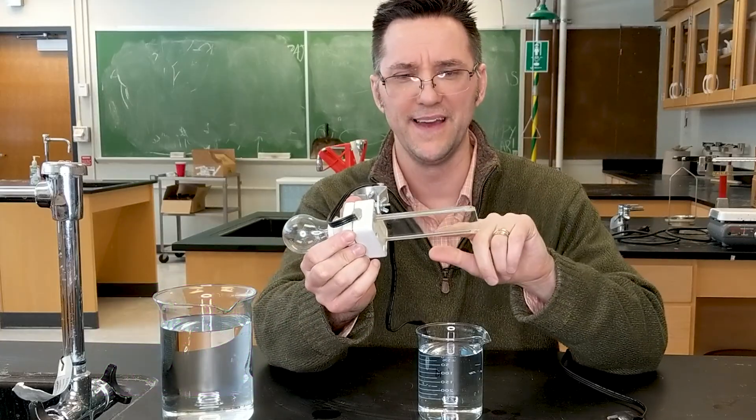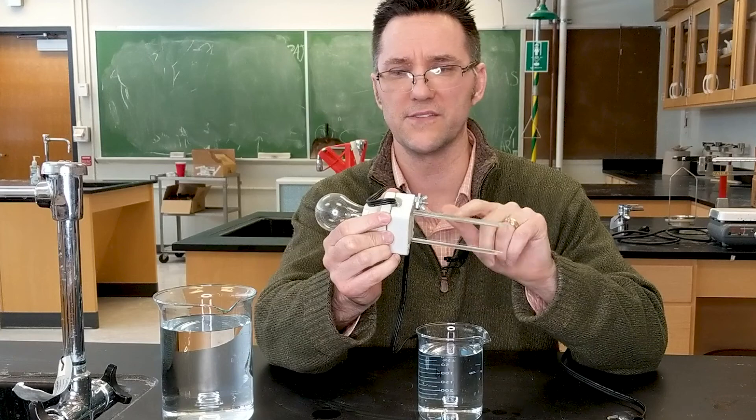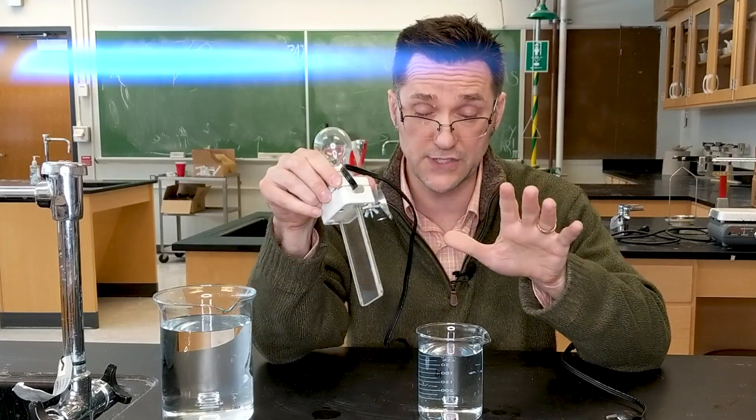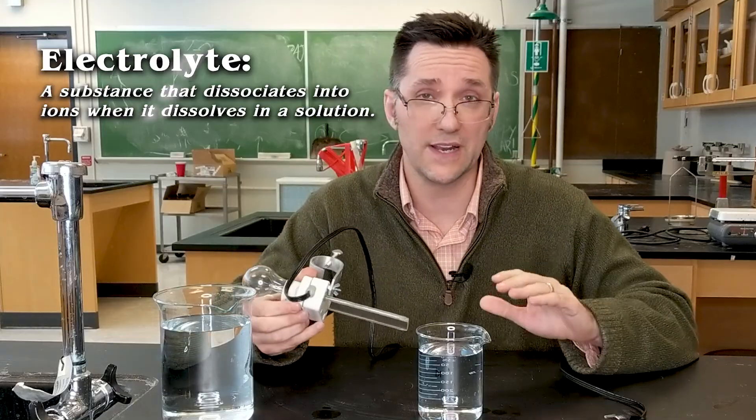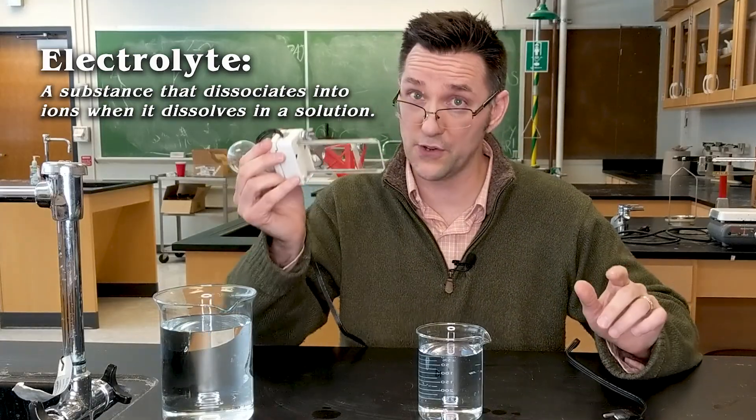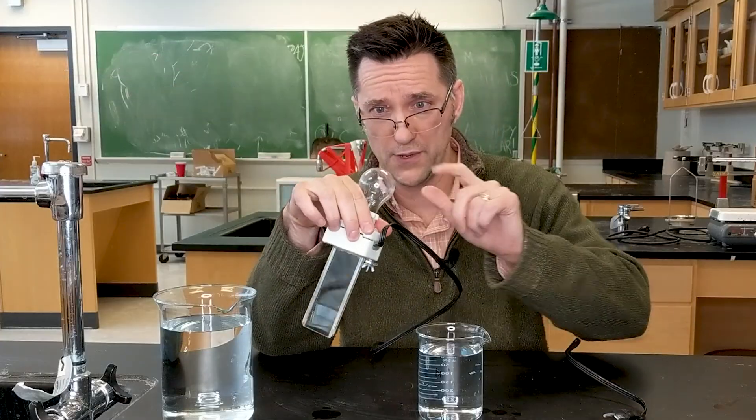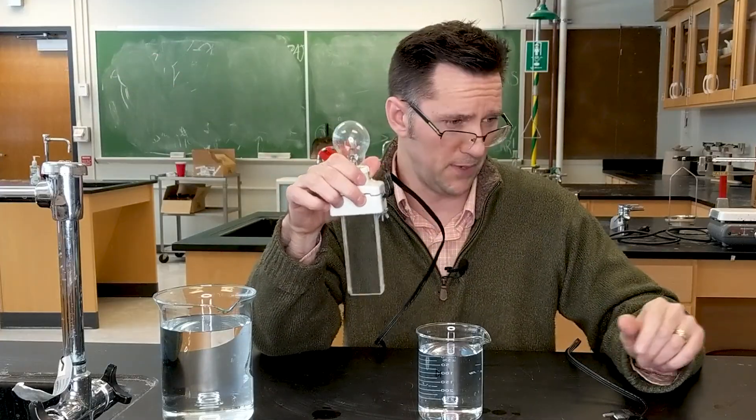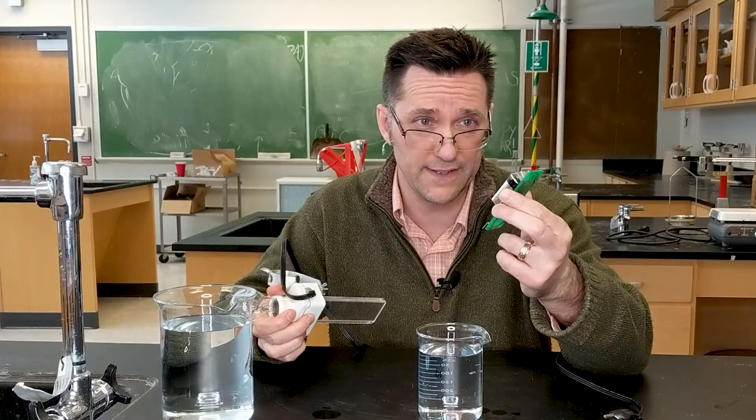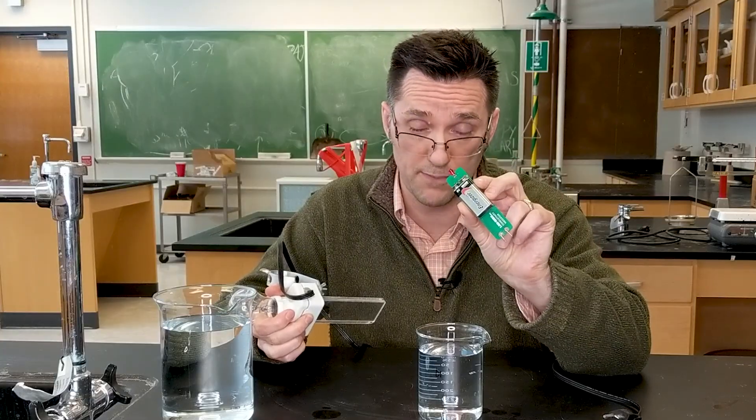But if it's wet, all bets are off. And so the electricity cannot complete the circuit, so the light bulb won't light. But if I put it in a solution that contains electrolytes, those electrolytes are going to allow the current to flow. So what I'm going to do is run through a series of solutions and show you with two conductivity testers. A big one, we'll need a little bit more to get this big light bulb to light, and then I have this little cute, adorable pocket conductivity tester using just an LED and a 9-volt battery.